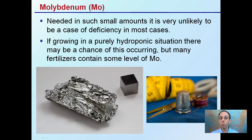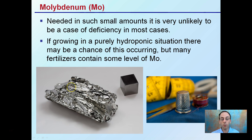Molybdenum is needed in such small amounts that it's very unlikely to be the cause of a deficiency in most instances. If growing in a purely hydroponic situation there may be a chance, but many fertilizers contain some level of molybdenum. To illustrate just how little is needed — to grow an acre of corn, you need about a thimble-full of molybdenum for the entire acre. The fertilizer form is not the pure element; it would be in a molecule complex.